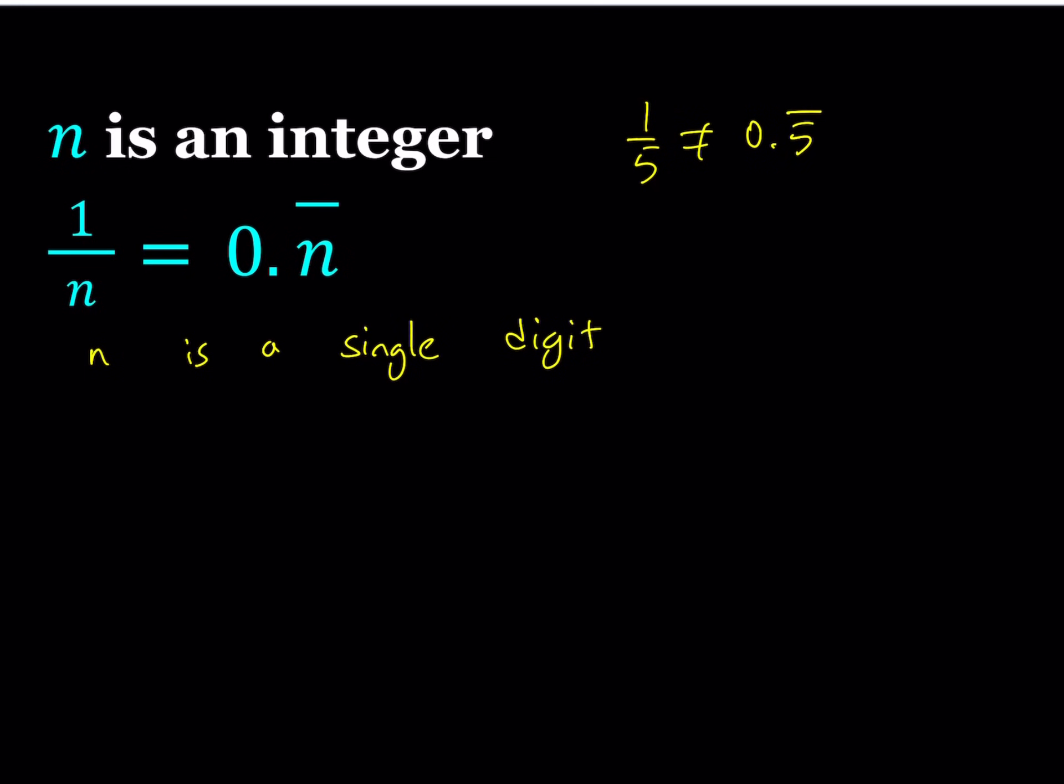We know that because 0.5 repeating can be written as 5 ninths but 5 ninths and 1 fifth are not equal. Well that was just a trial, an error. It didn't work and that's perfectly fine. But here's the thing. If n is a single digit number obviously, I can write the 0.n repeating as n over 9. As you see in the example 5 ninths.